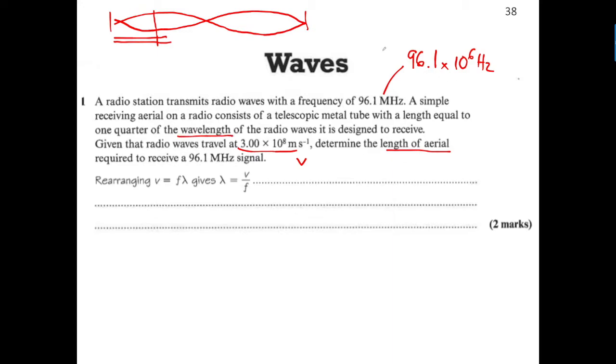After a while you should recognize that's frequency and that's velocity, so this is a wave equation. You rearrange the wave equation to get λ = V/F. The velocity is 3 × 10⁸ and the frequency is 96.1 × 10⁶. When you put that into the calculator, you get an answer.